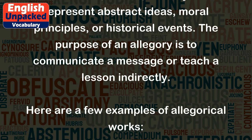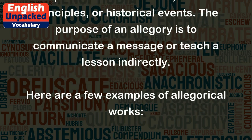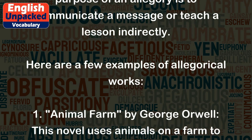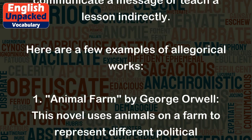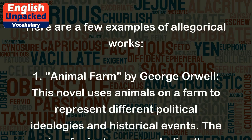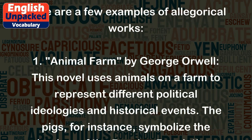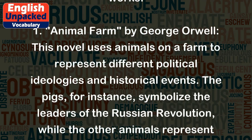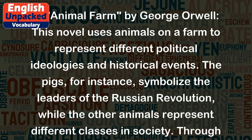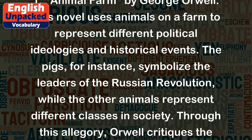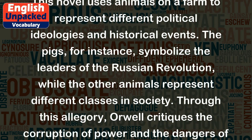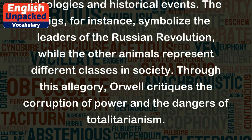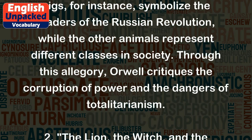Here are a few examples of allegorical works. 1. Animal Farm by George Orwell. This novel uses animals on a farm to represent different political ideologies and historical events. The pigs, for instance, symbolize the leaders of the Russian Revolution, while the other animals represent different classes in society. Through this allegory, Orwell critiques the corruption of power and the dangers of totalitarianism.